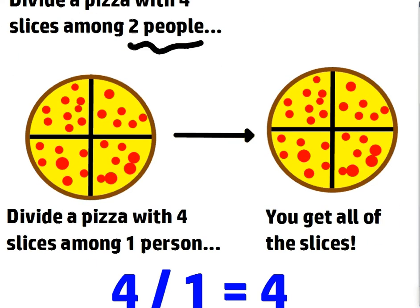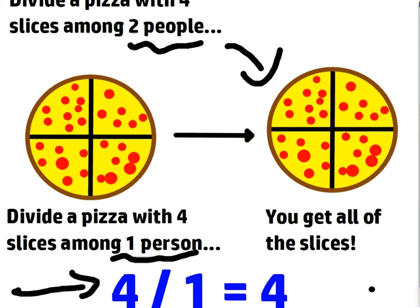But what if you get a pizza that has four slices, and you divide it among just yourself? Then you get all the slices, right? In other words, four divided by one is equal to four. So the point is, if you have a pizza and you want all the slices, then you can't share it with anybody.